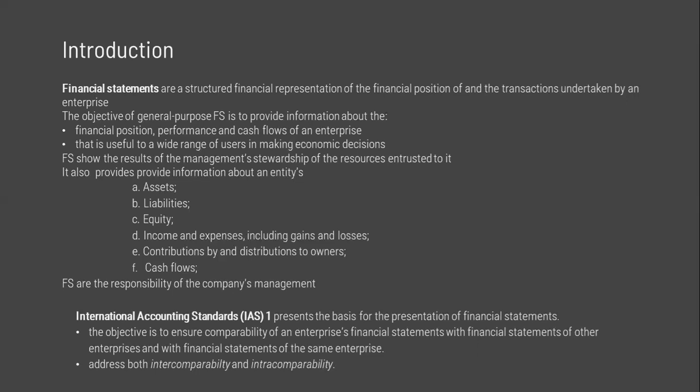IAS 1 — Presentation of Financial Statements — prescribes the basis for the presentation of general purpose financial statements and the guidelines for their structure and the minimum requirements for their content to ensure comparability. There are two types of comparability: intra-comparability, or horizontal or inter-period, which refers to the comparability of financial statements of the same entity from one period to another; and inter-comparability, or dimensional, which refers to the comparability of financial statements between different entities. Comparability requires consistency in the adoption and application of accounting policies.